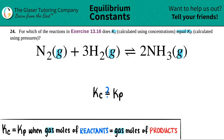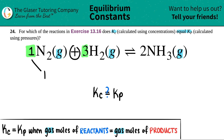That comes from the coefficients — the big numbers in the front. For N2, I didn't see a number in front, but that means I had one mole of N2. There are three moles of gas for the H2. So one plus three gives me a total of four moles of gas on my reactant side.